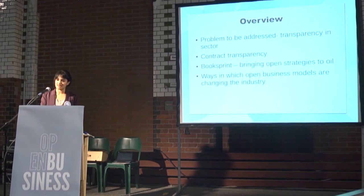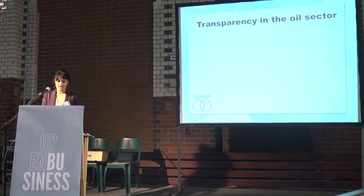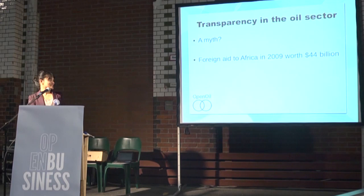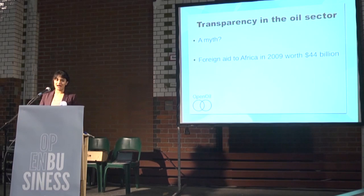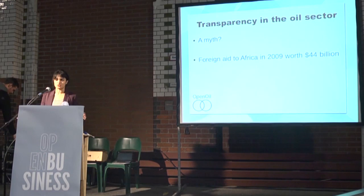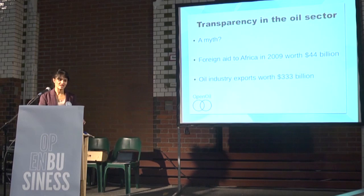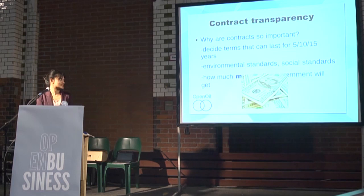We tried to address this with a book sprint, bringing an open strategy to a closed industry, and I think there's a lot of crossover with the music sprint and more generally how open business models can change the oil industry. Why are contracts so important? Contracts decide things that can make a huge difference. Foreign aid to Africa in 2009 was worth 44 billion dollars, but oil exports from Africa — just exports — were worth 333 billion dollars. That's many more times the value of aid, and imagine how different the world could look if all of that money was used for citizens.